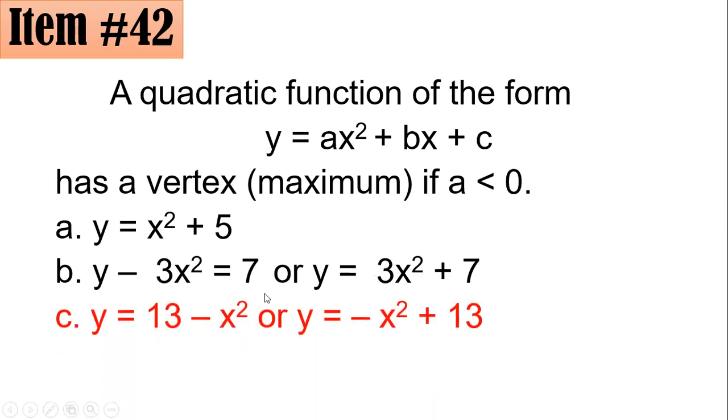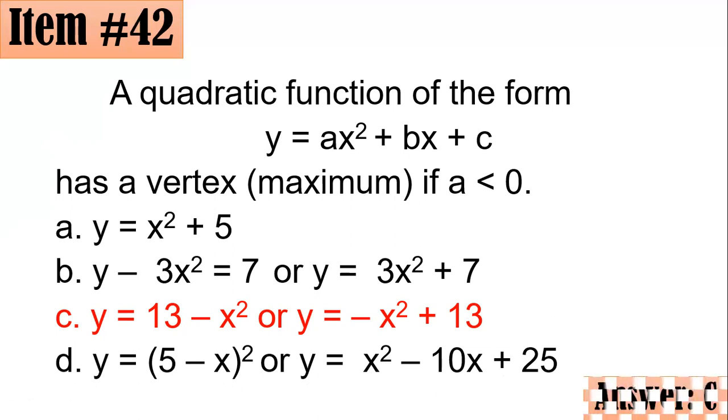For the third one, it could be rewritten as y equals negative x squared plus 13. So you see, the leading coefficient is negative. So I'm sure this opens downward, and the vertex is a maximum. And if you have y equals 5 minus x quantity squared, simplifying that makes y equals x squared minus 10x plus 25. So this still opens upward, and thus, no maximum. Hence, the correct answer here is letter C.